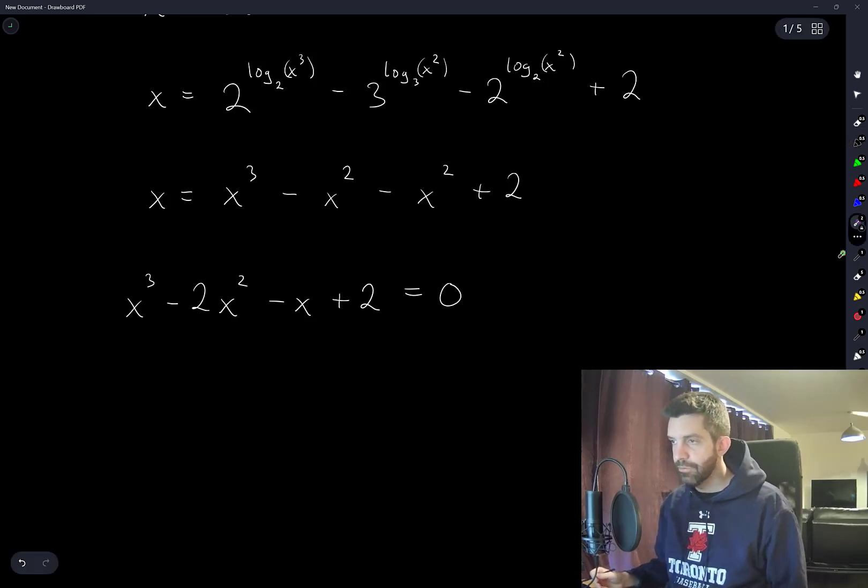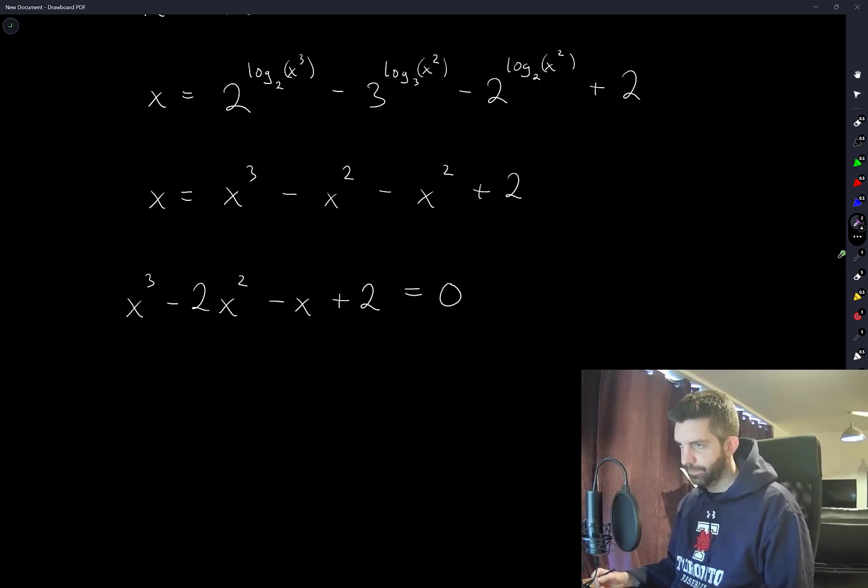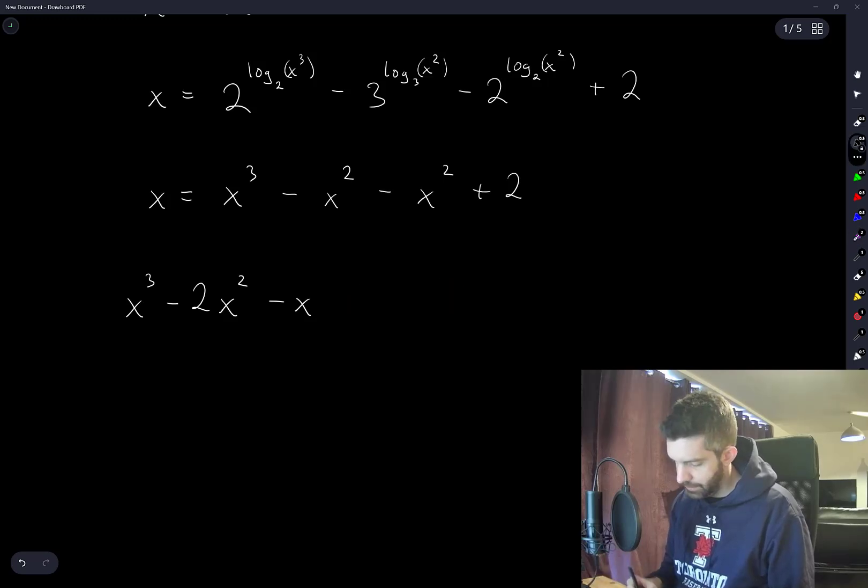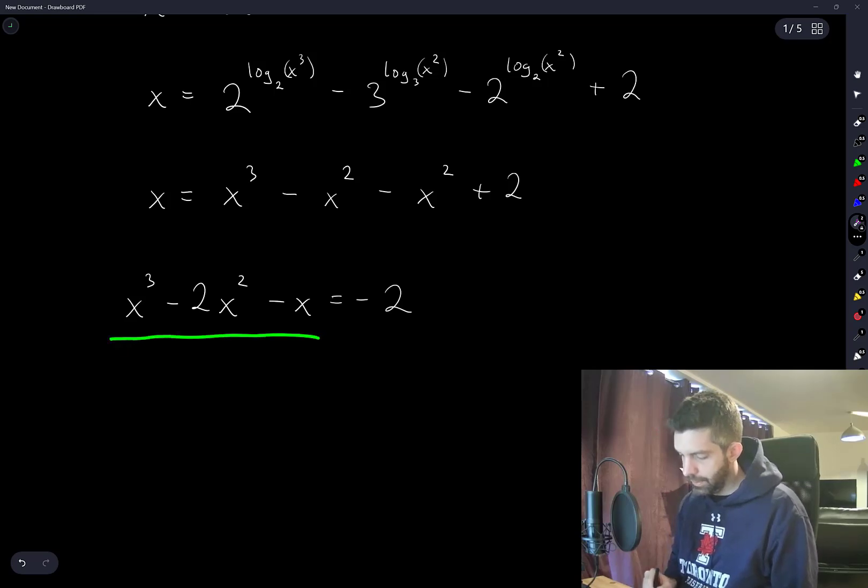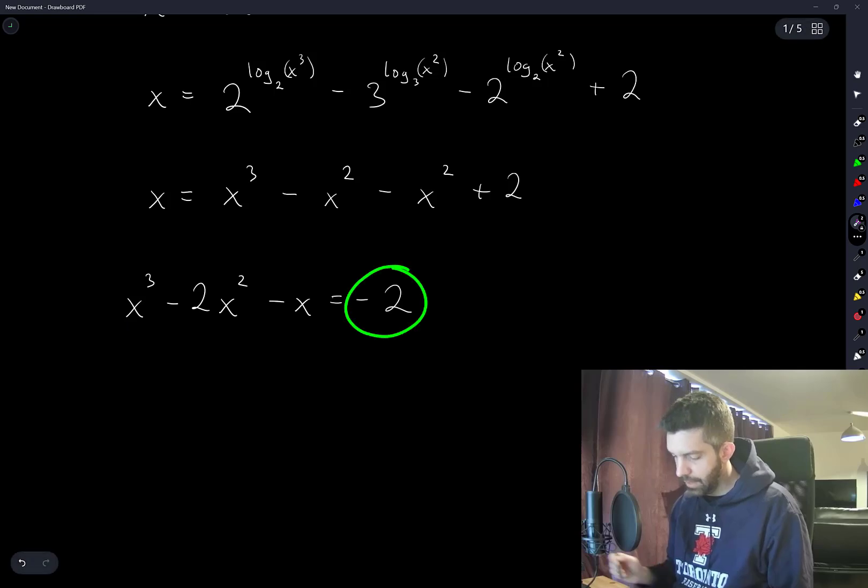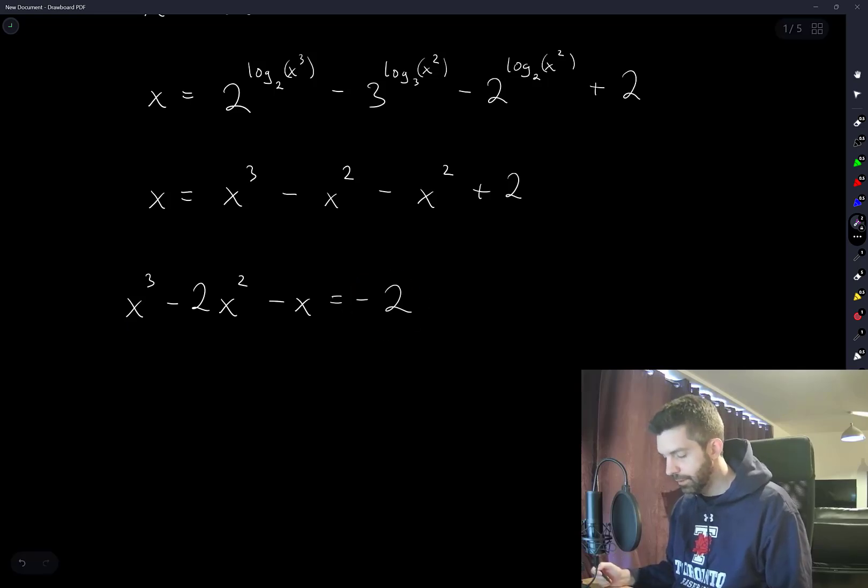So the only thing we have to be careful about now—we're asked for the number of positive values of x which satisfy this equation. So it is a cubic equation. What I'm going to do is I'm going to rewrite this equal to negative 2. I'm going to think of this as being a function of x and see how many times it could possibly cross the value of negative 2.